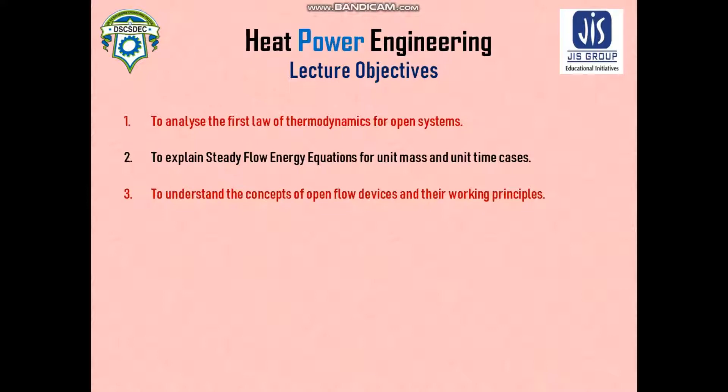The control volume can interact with the surroundings via heat transfer or work transfer. Since there is mass flow, energy is also carried through this mass. There are three types of energy transfer: heat or work transfer between system and surroundings, and energy quantities associated with the mass flow that must also be considered.